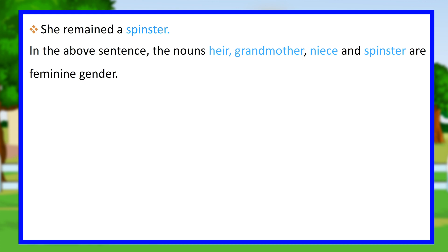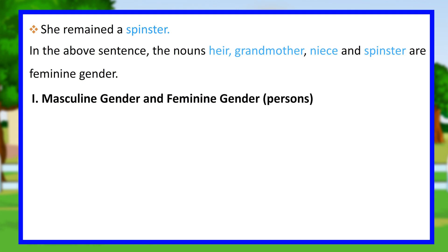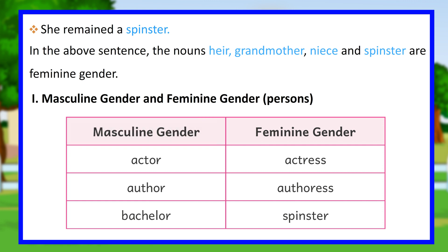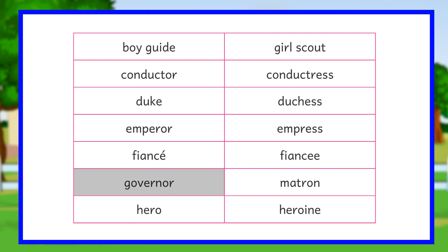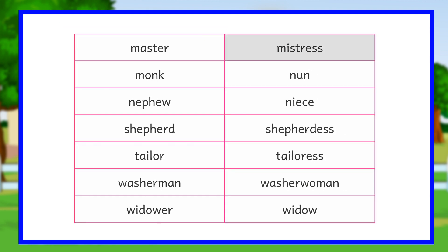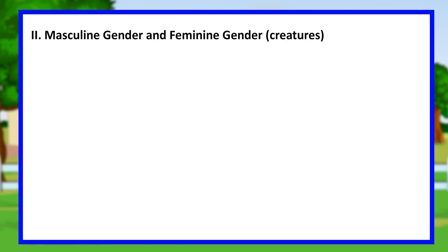Masculine and feminine gender for persons — masculine / feminine: actor/actress, author/authoress, bachelor/spinster, boy scout/girl scout, conductor/conductress, duke/duchess, emperor/empress, fiancé/fiancée, governor/matron, hero/heroine, master/mistress, monk/nun, nephew/niece, shepherd/shepherdess, tailor/tailoress, washerman/washerwoman, widower/widow.